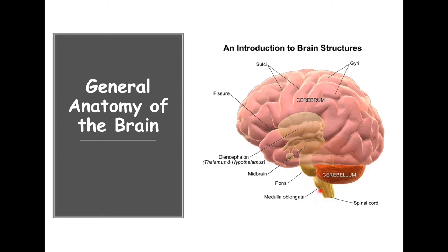Then we have our cerebellum and our brainstem, which consists of multiple parts like the medulla oblongata. There's a very important structure in the brain called the hypothalamus — it's quite significant and plays a huge role, especially in the endocrine system as well. The diencephalon includes the hypothalamus and the thalamus. We also have fissures in the brain as well as sulci and gyri.